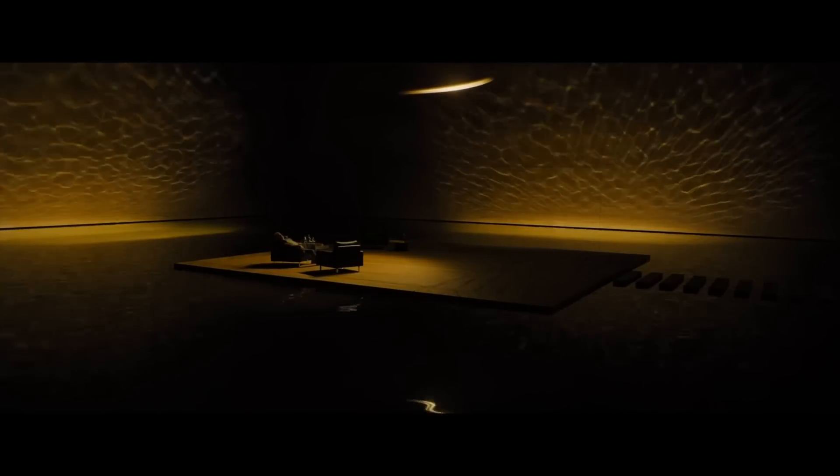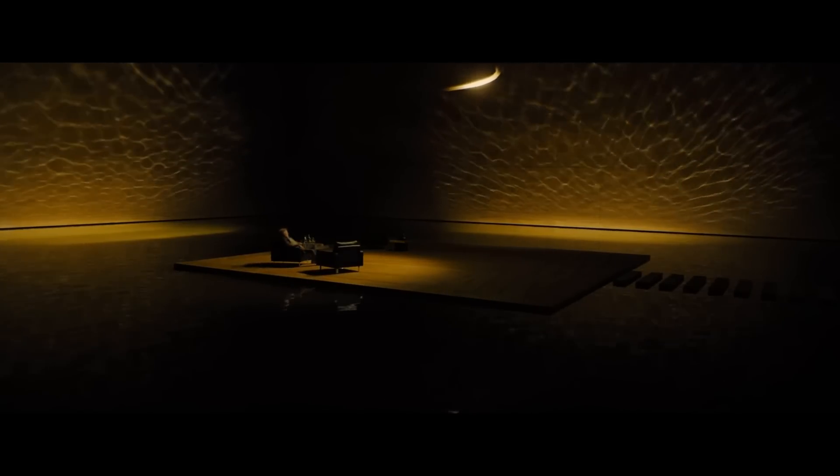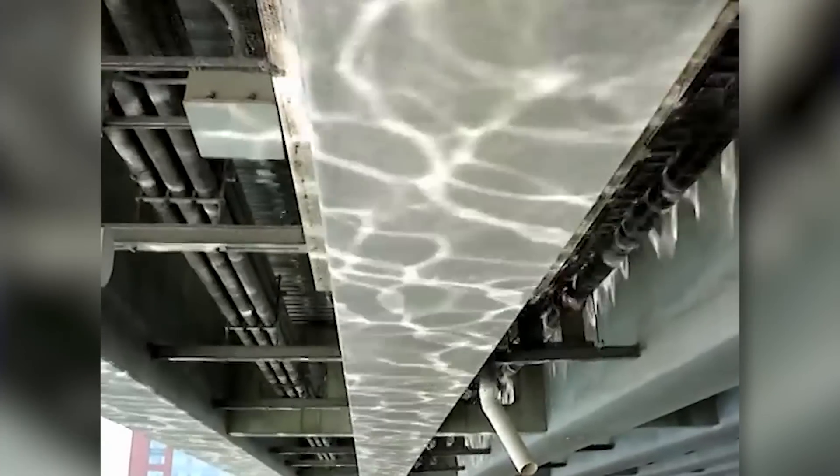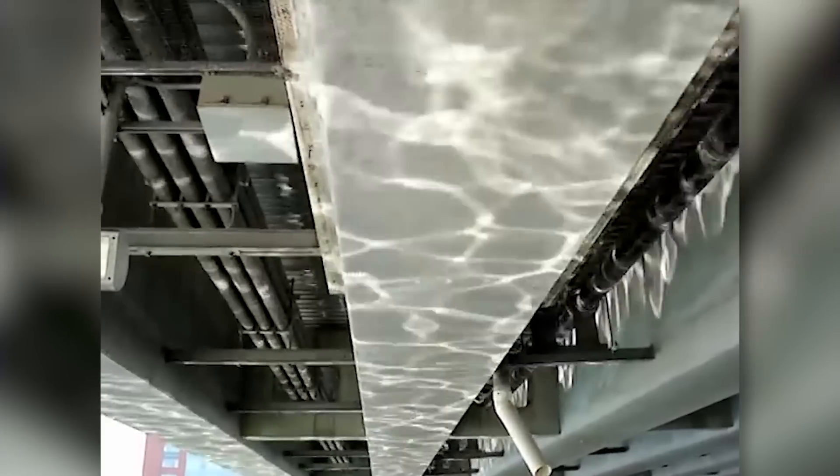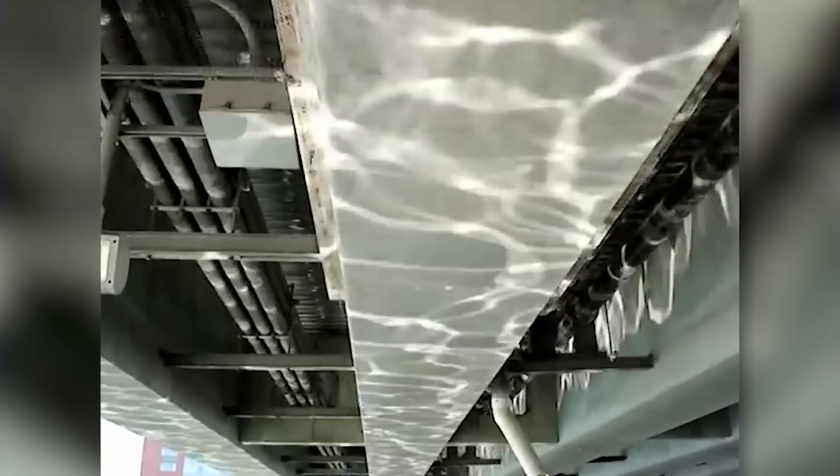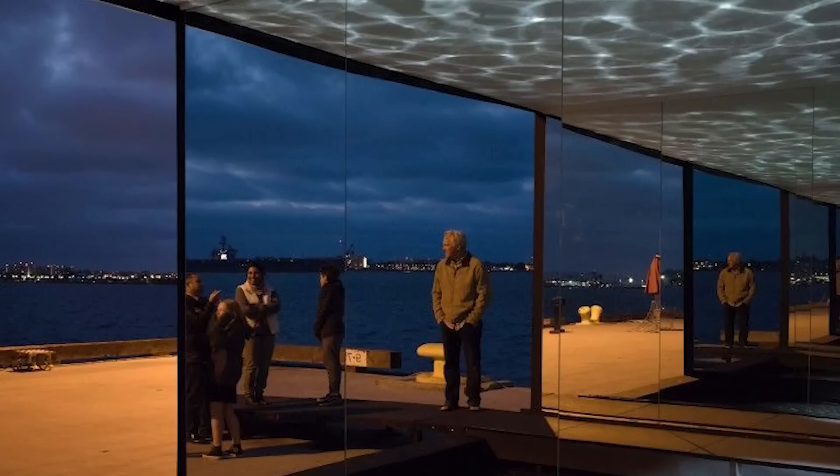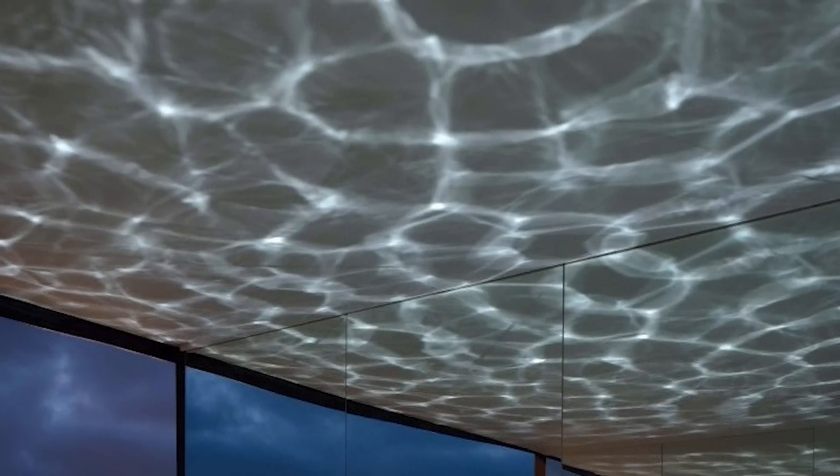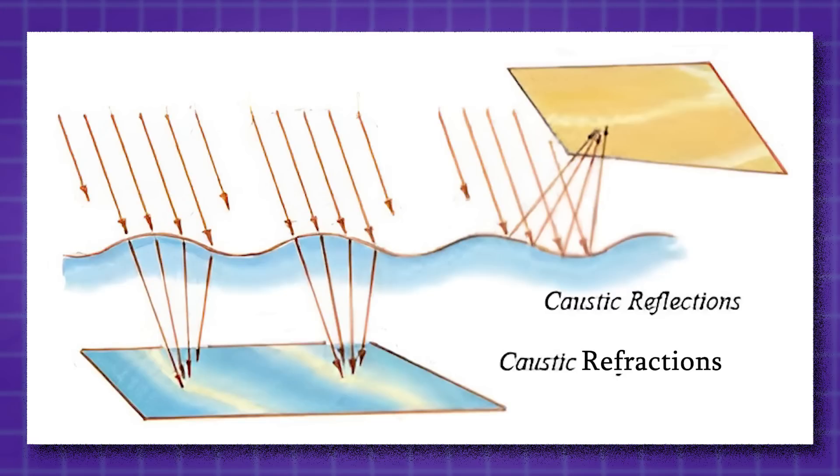For example, water reflection caustics refer to the patterns of light and shadow that are created when light interacts with the surface of water and reflects onto surrounding objects or surfaces. These caustics effects are practically notable due to the transparent and refractive nature of water. When light strikes the surface of water, it can undergo several interactions, including reflection and refraction.